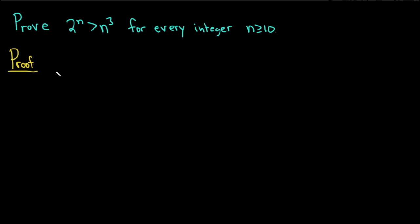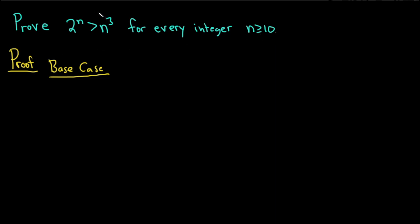We'll start with the first step, which is called the base case. I always like to label the steps. The base case is the starting point. In this case, we care about integers greater than or equal to 10, so we're starting at 10. So we have to verify that our statement is true when n is equal to 10.